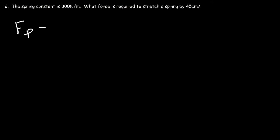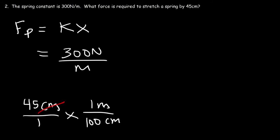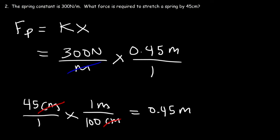Let's move on to number 2. The spring constant is 300 newtons per meter. What force is required to stretch a spring by 45 centimeters? Using Fp = kx, our goal is to find Fp. k is 300 newtons per meter. We need to convert 45 centimeters to meters by dividing by 100, giving 0.45 meters. So it's 300 times 0.45, which gives us 135 newtons.